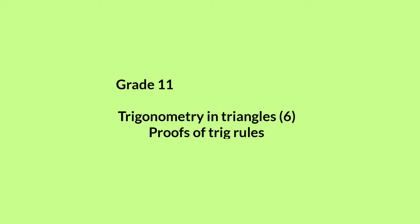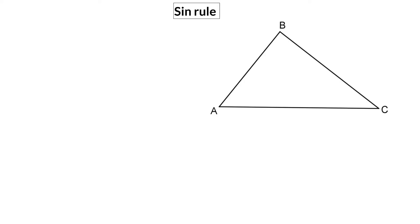In this last lesson for trigonometry in triangles, we are going to have a look at the proofs of the trig rules that we've been using in the first five lessons. The sin, cos and area rule are formulated to expand our trigonometry uses to any triangle and not only 90 degree triangles.